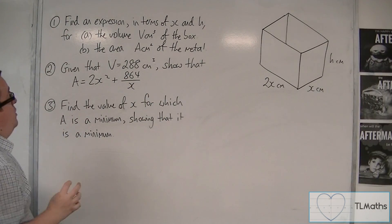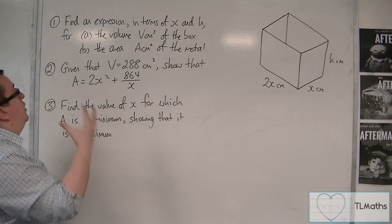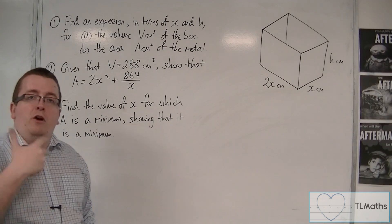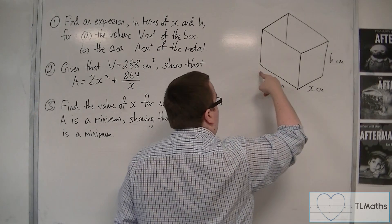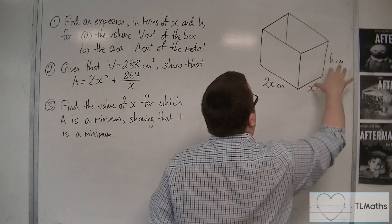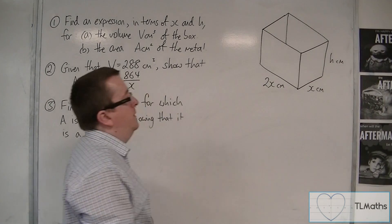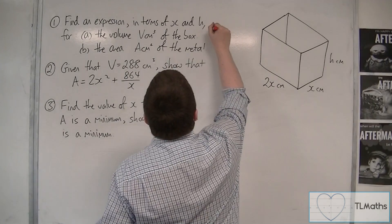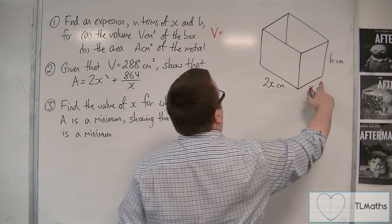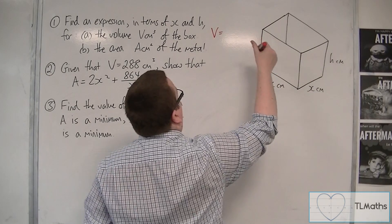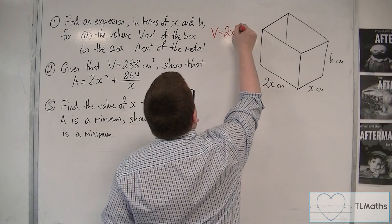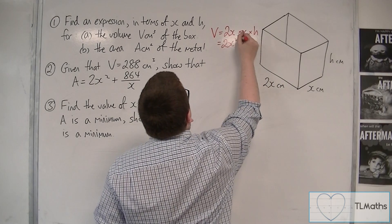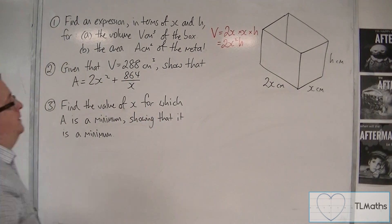Firstly, find an expression in terms of x and h for the volume of the box. Well, the volume of a cuboid is just the base times the width times the height. So we could say that V is equal to 2x times x times h. So 2x times x times h. And that would give me 2x squared h.